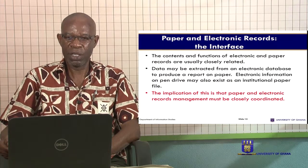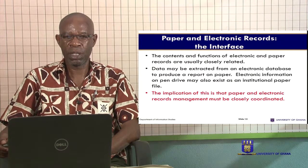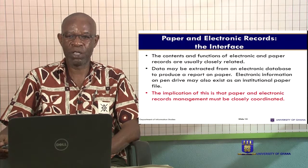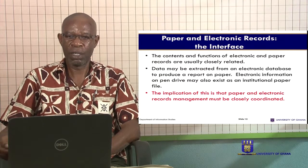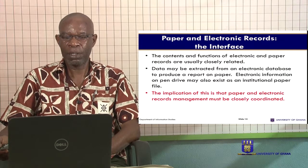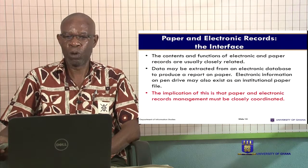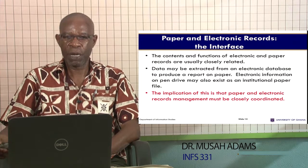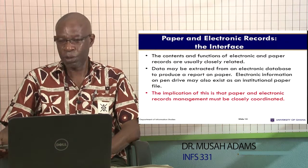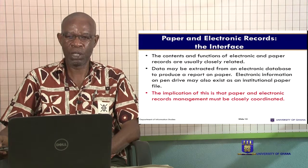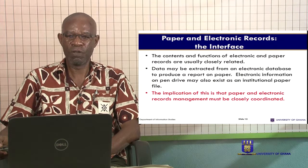And you can convert an electronic record into a paper record by printing out a hard copy — it will not change the content unless you make alterations. Data may be extracted from an electronic database to produce a report on paper. The implication of this is that paper and electronic records must be closely coordinated. You are actually managing the same information — it is the format of the information, whether paper-based or electronic, that is the only difference.